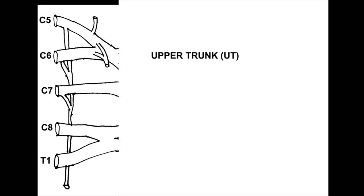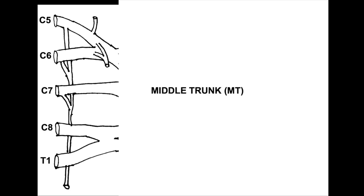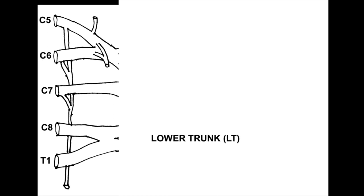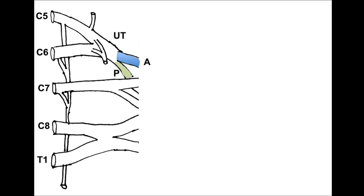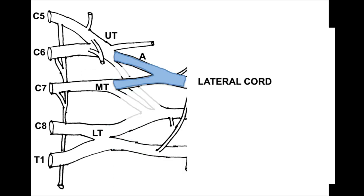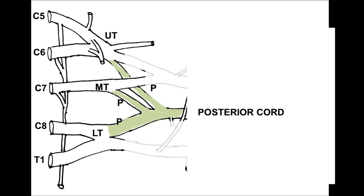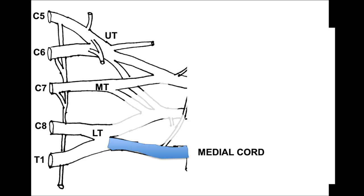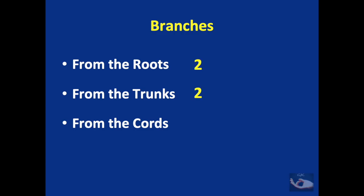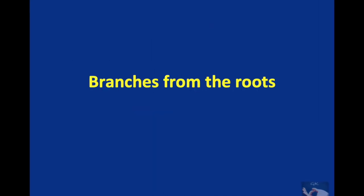The roots C5, C6, C7, C8 and T1. The C5 and C6 roots join together to form the upper trunk. C7 continues as the middle trunk, and C8 and T1 join to form the lower trunk. Each trunk gives off an anterior and posterior division. The anterior divisions of the upper and middle trunks form the lateral cord; the posterior divisions of all three trunks form the posterior cord; and the anterior division of the lower trunk continues as the medial cord. From the roots we have two branches, from the trunks two branches, from the cords seven branches and six terminal branches.